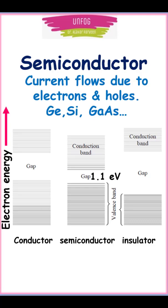In a semiconductor, the current flows due to electrons and holes. The forbidden energy gap in a semiconductor is 1 electron volt. Germanium, silicon, gallium arsenide, etc. are examples of a semiconductor.